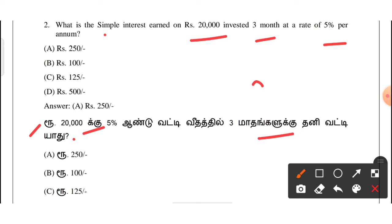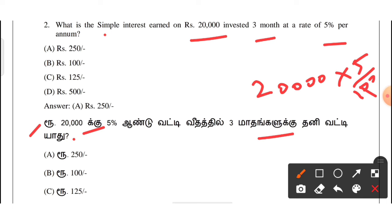It is easy to do. So this is ₹20,000 at 5% per annum. So the rate is equal to 2.0, so it will be ₹1,000 per annum.